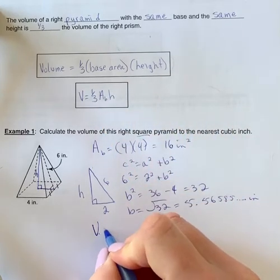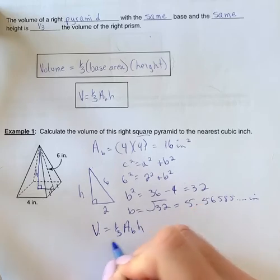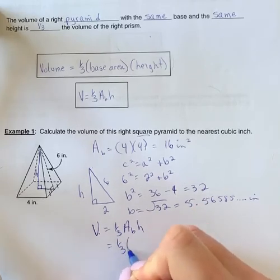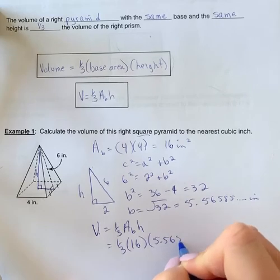So volume is equal to one-third area of the base times height. So we have one-third times 16 times my height of 5.56585.